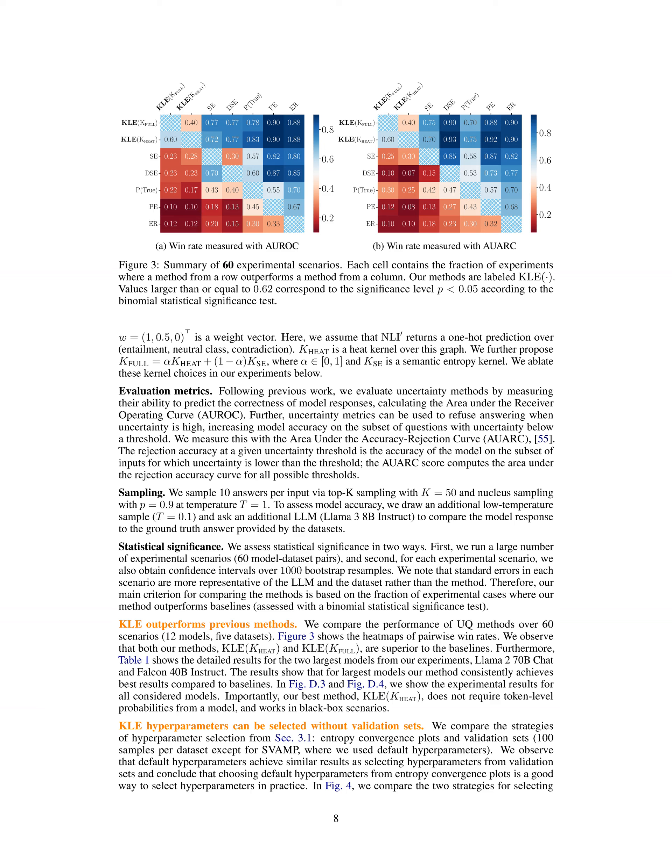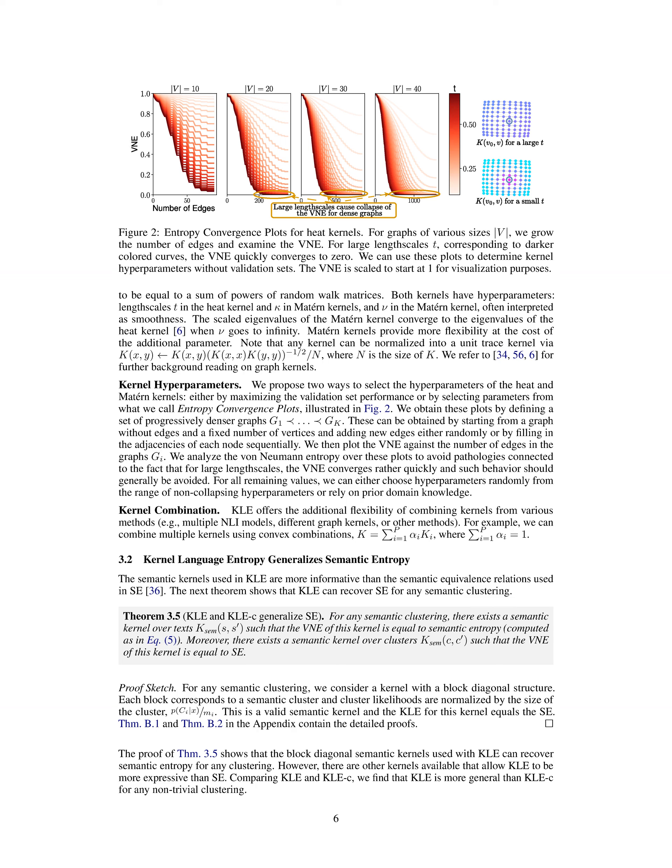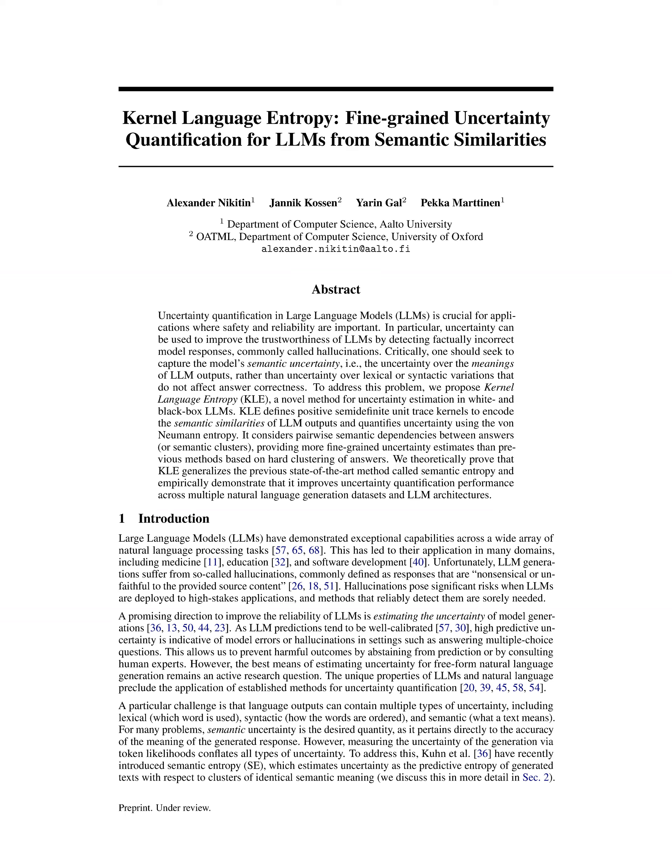Importantly, KLE did not require token-level probabilities and worked effectively in black-box scenarios. The method's hyperparameters could be selected without validation sets, as default hyperparameters yielded similar results to those selected from validation sets. Overall, KLE demonstrated significant improvements in fine-grained semantic uncertainty estimation compared to existing methods.